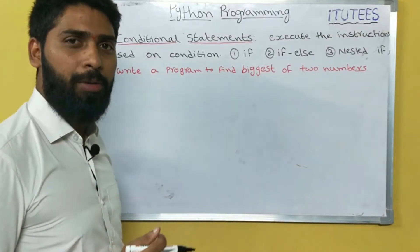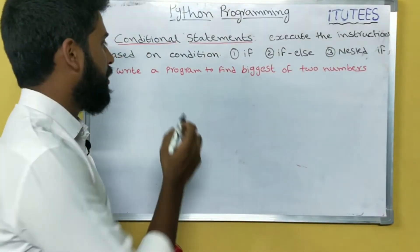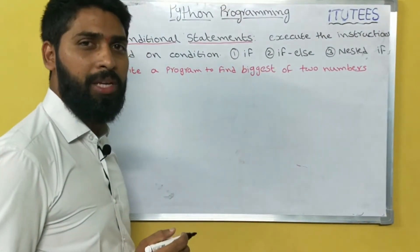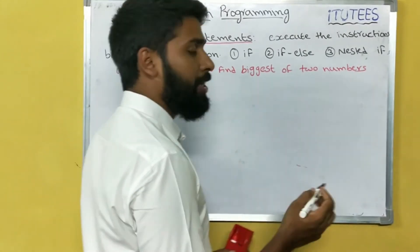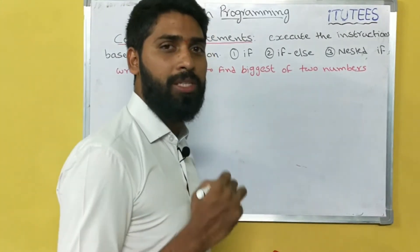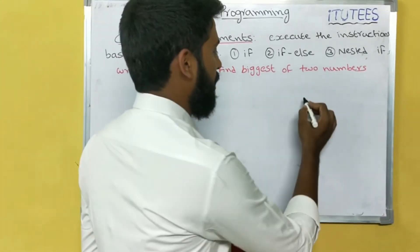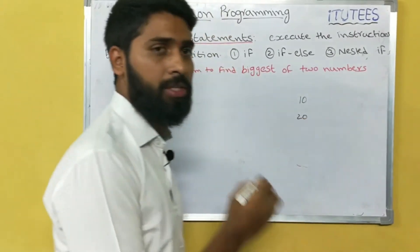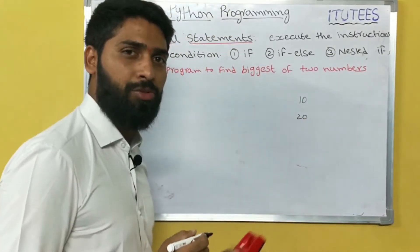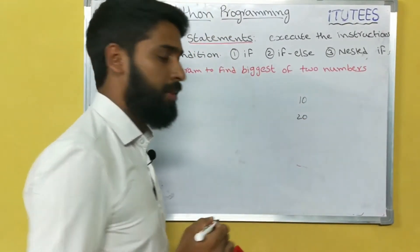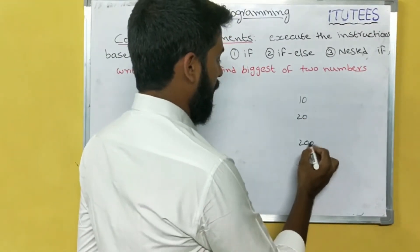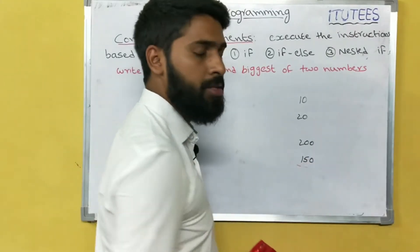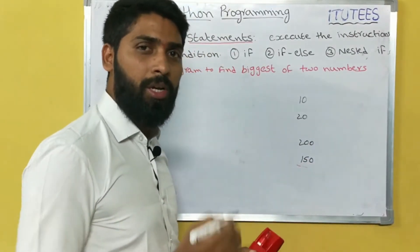Now we can see another program. Write a program to print the biggest of 2 numbers. How we can determine the biggest of 2 numbers — for example, 10 and 20: which is biggest? 20. Another example: 200 and 150 — which is the biggest number? 200.